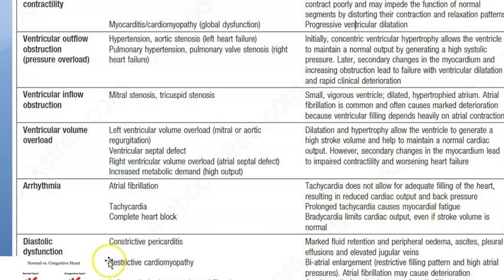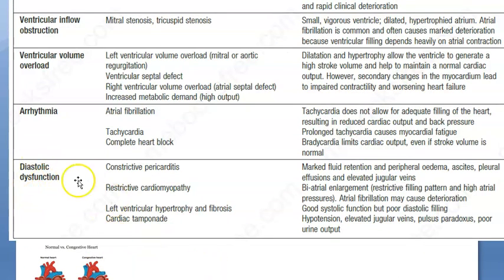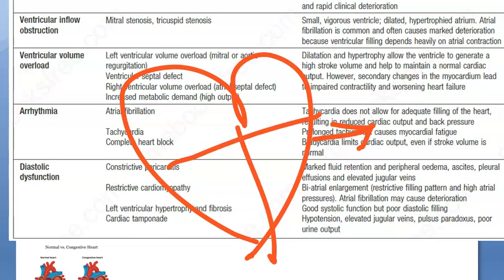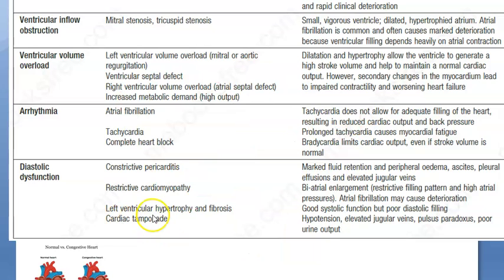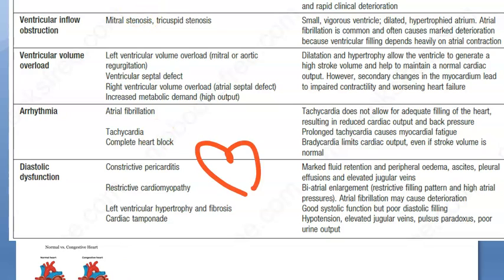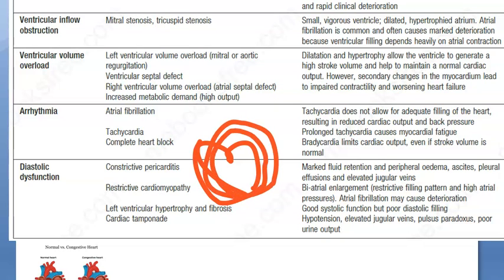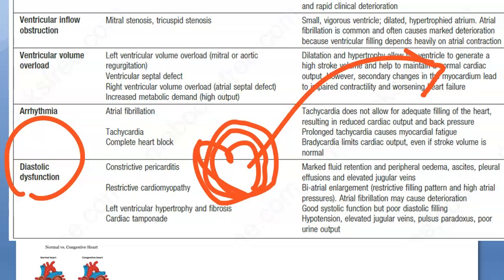Diastolic dysfunction is the last major cause. During diastole the ventricle must expand to fill with blood. If something prevents this expansion — such as cardiac tamponade, where there is so much external pressure on the heart, or restrictive cardiomyopathy where the heart is constricted — the heart cannot fill up properly, leading to low cardiac output.